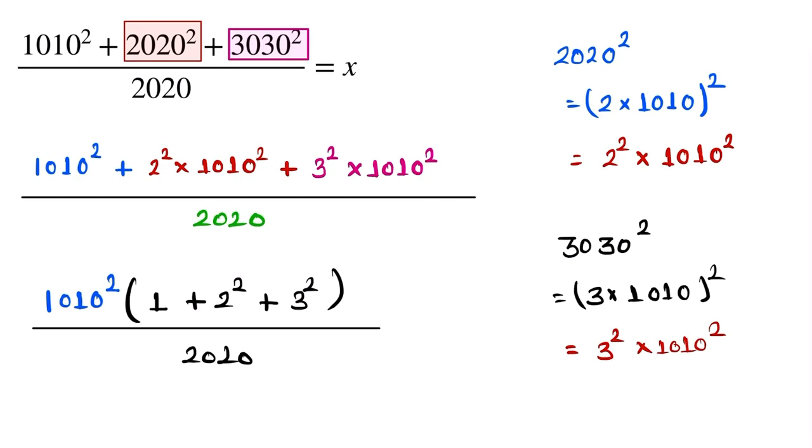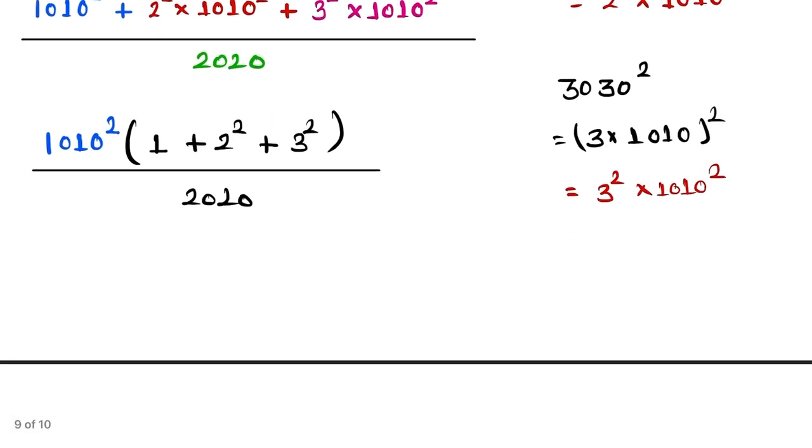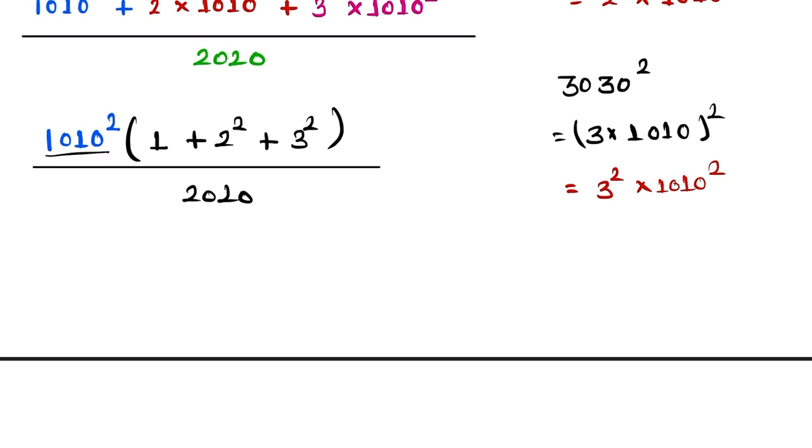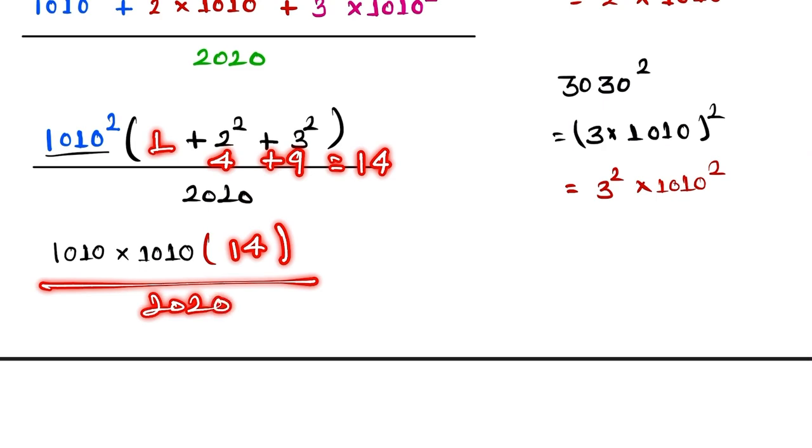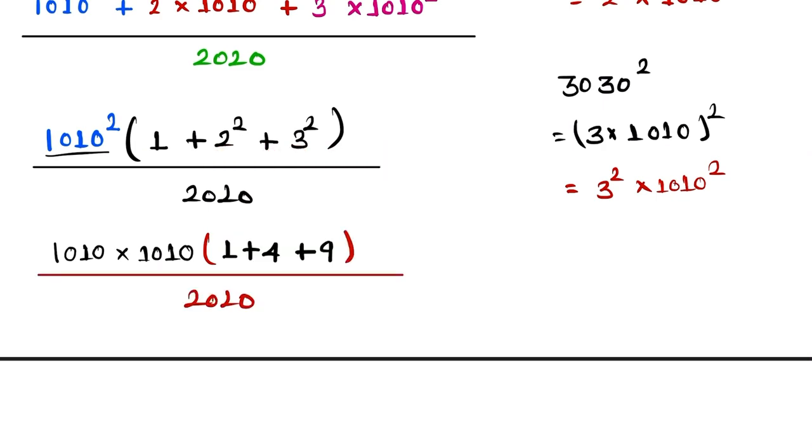Now focus here. 1010 is a square form, so we can write it as 1010 into 1010. Here this one is written as 1 plus 4 plus 9.